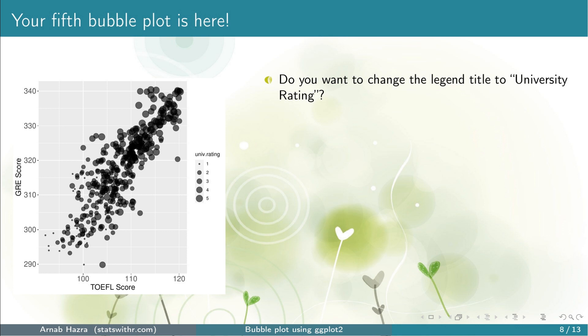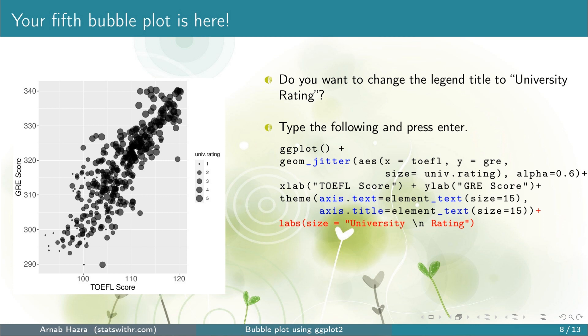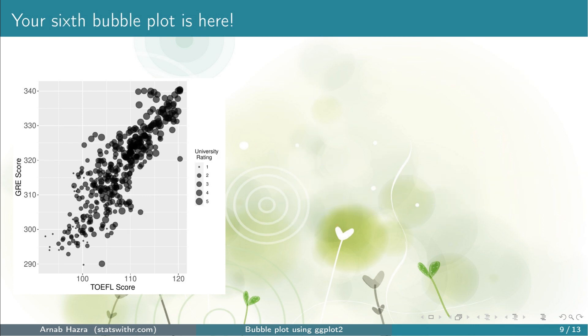Next, note that the legend title is 'univ.rating', which is just the name of the vector. You might want to change it to a proper title, say 'University Rating'. To do that, add labs(size = 'university\nrating') within quotes. Here, the \n breaks the words 'university' and 'rating' into two lines; otherwise the title would be too long. Press enter and you get your sixth bubble plot with a proper legend title.